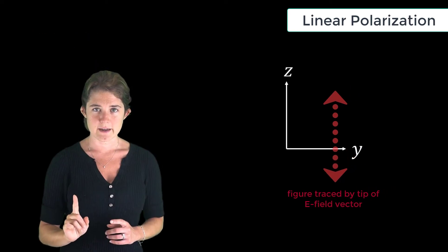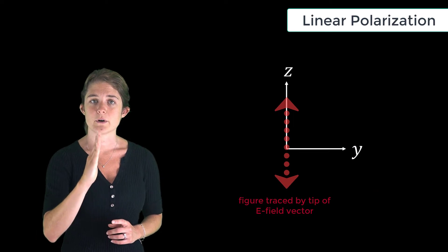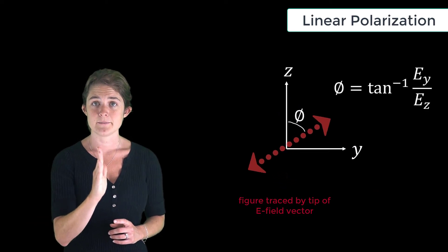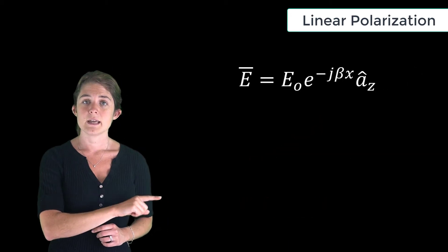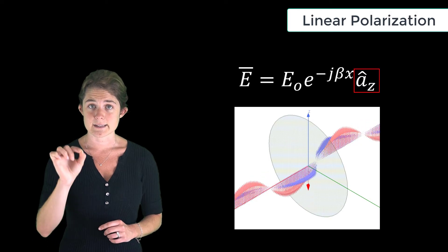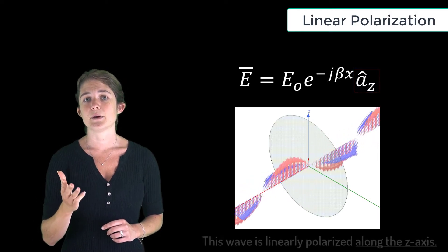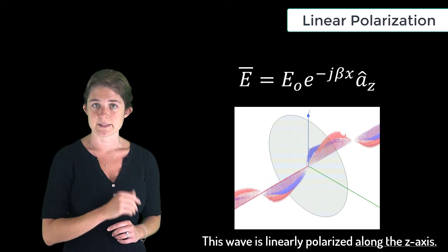We can further categorize linearly polarized waves by specifying the orientation of the line. For instance, if an electric field is defined by this equation, its temporal variation will be up and down along the z-axis. So we could say that this wave is linearly polarized along the z-axis.